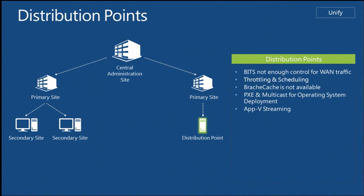For distribution points, put one at your branch if BranchCache isn't enough to control WAN traffic. We now support BranchCache — you can have a Windows Server 2008 R2 box as a distribution point, have clients communicate directly with the primary, and share content with each other. If that's not available, put a distribution point at that remote location. If you need PXE or Multicast for OS deployment, or if you're doing App-V Streaming, you'll want a local DP.